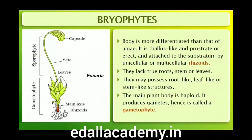They play an important role in plant succession on bare rocks and soil. The plant body of bryophytes is more differentiated than that of algae. It is thallus-like and prostrate or erect, and attached to the substratum by unicellular or multicellular rhizoids. They lack true roots, stem or leaves, but may possess root-like, leaf-like or stem-like structures.